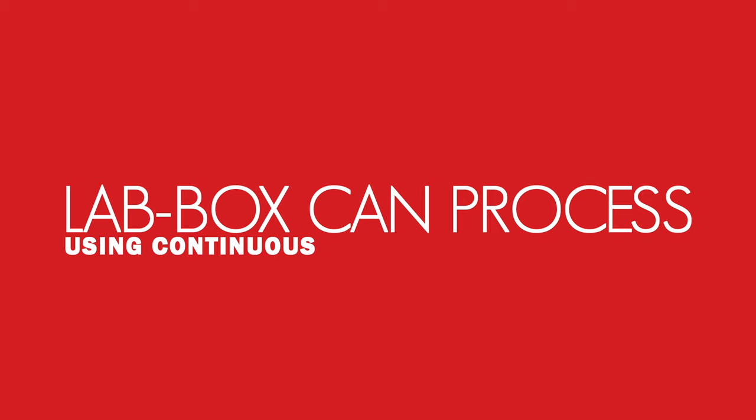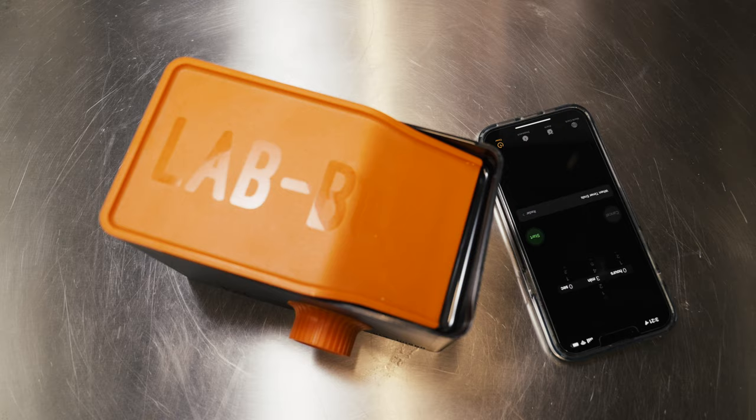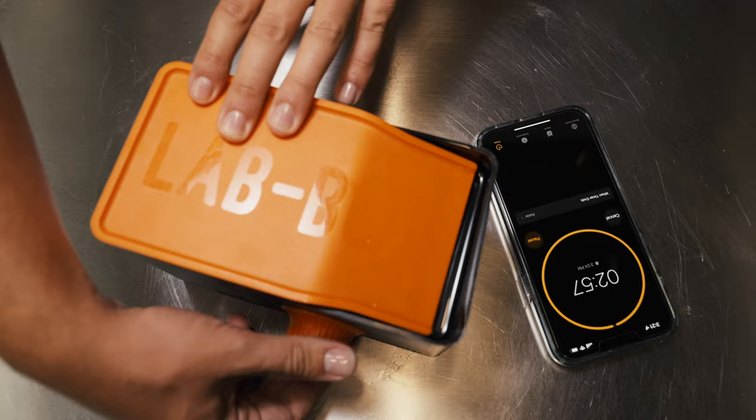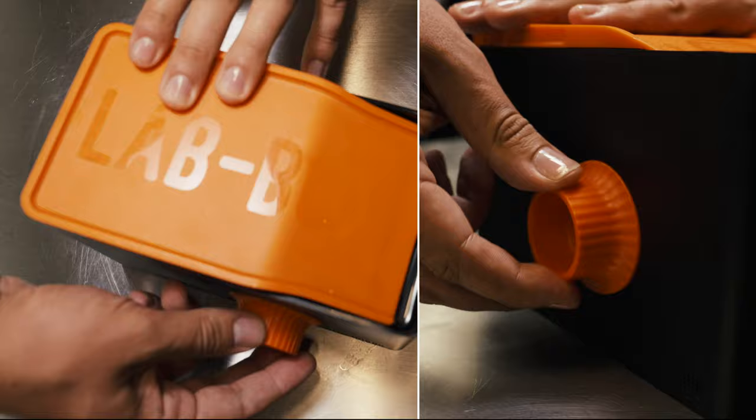The LabBox is able to process film using two different types of agitation, continuous or intermittent. Continuous agitation yields the most consistent developing and is more chemically efficient when using single shot or non-reusable chemistry, as it requires only 300 mils of solution. Continuous agitation involves rotating the agitation knob clockwise during the entire process. Intermittent agitation is also possible by filling the tank fully to 490 mils. This involves rotating the agitation knob clockwise for 10 seconds every 30 seconds. Once you've decided which agitation method to use and your chemistry is at the right temperature, you're ready to process your film.